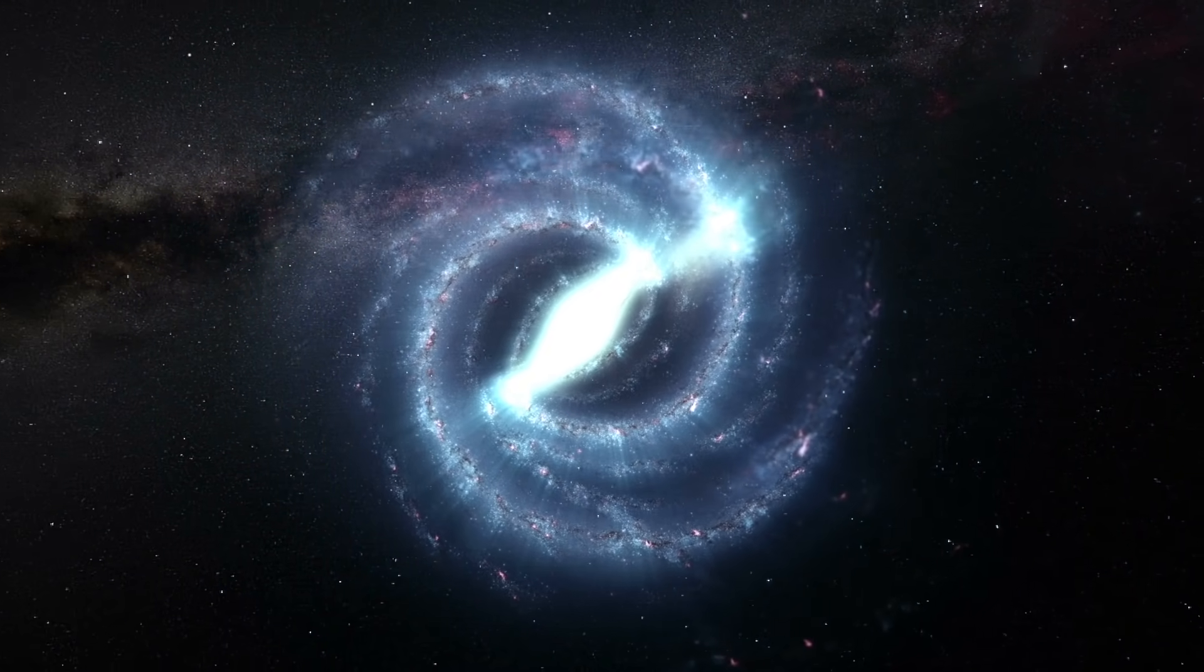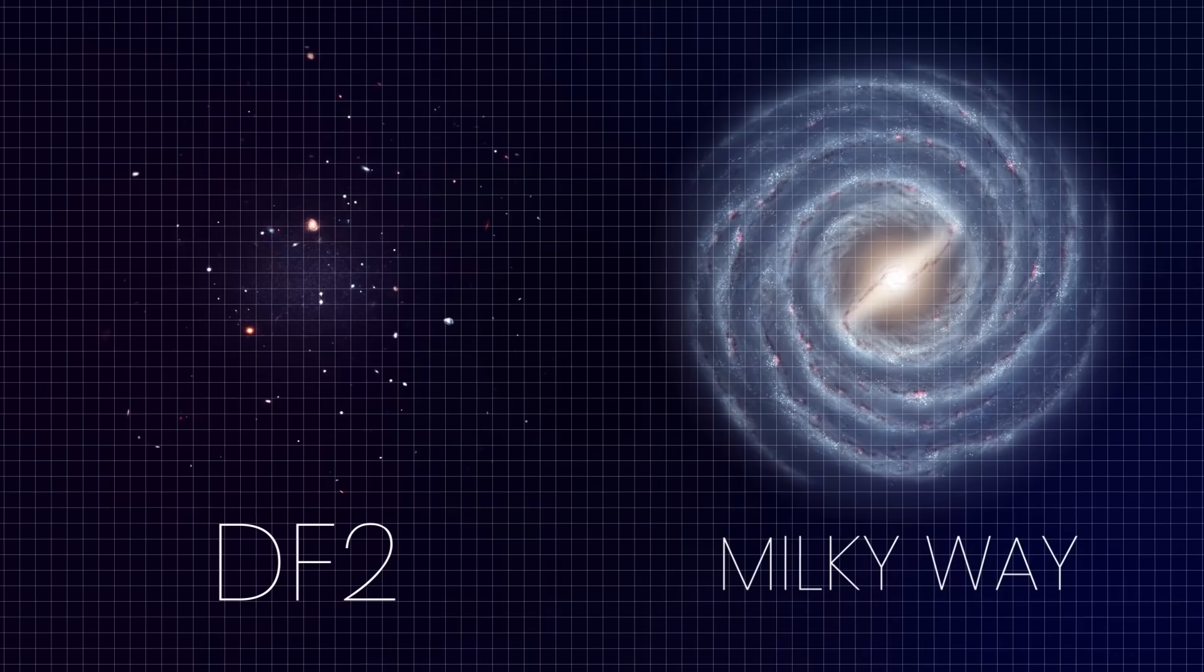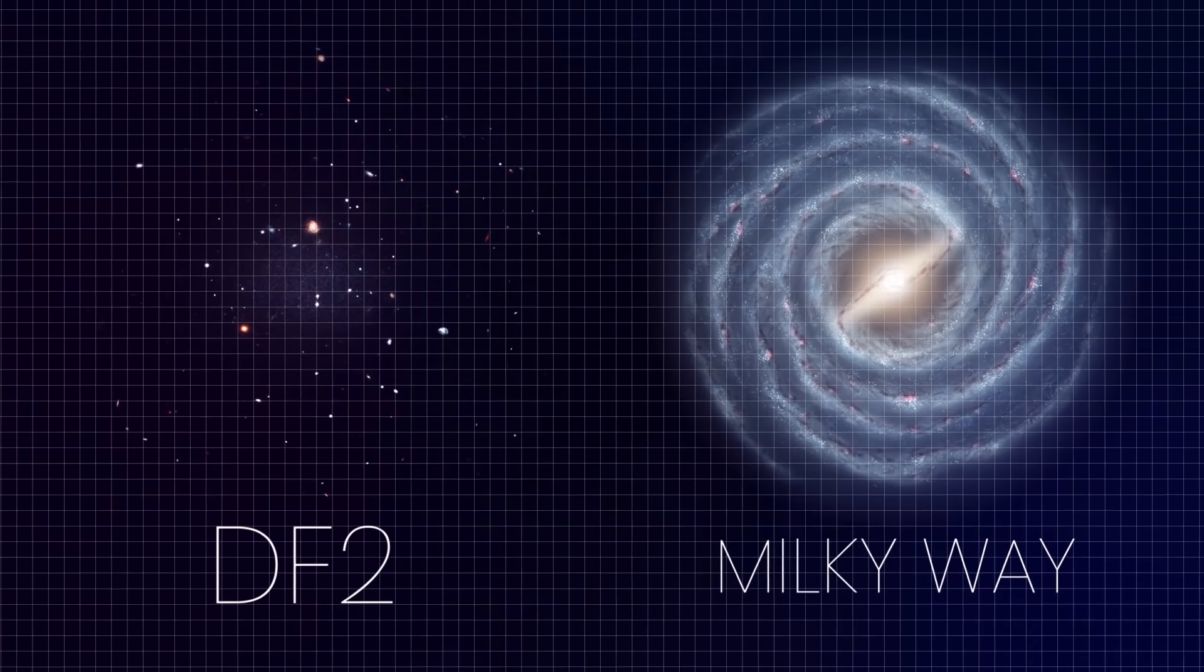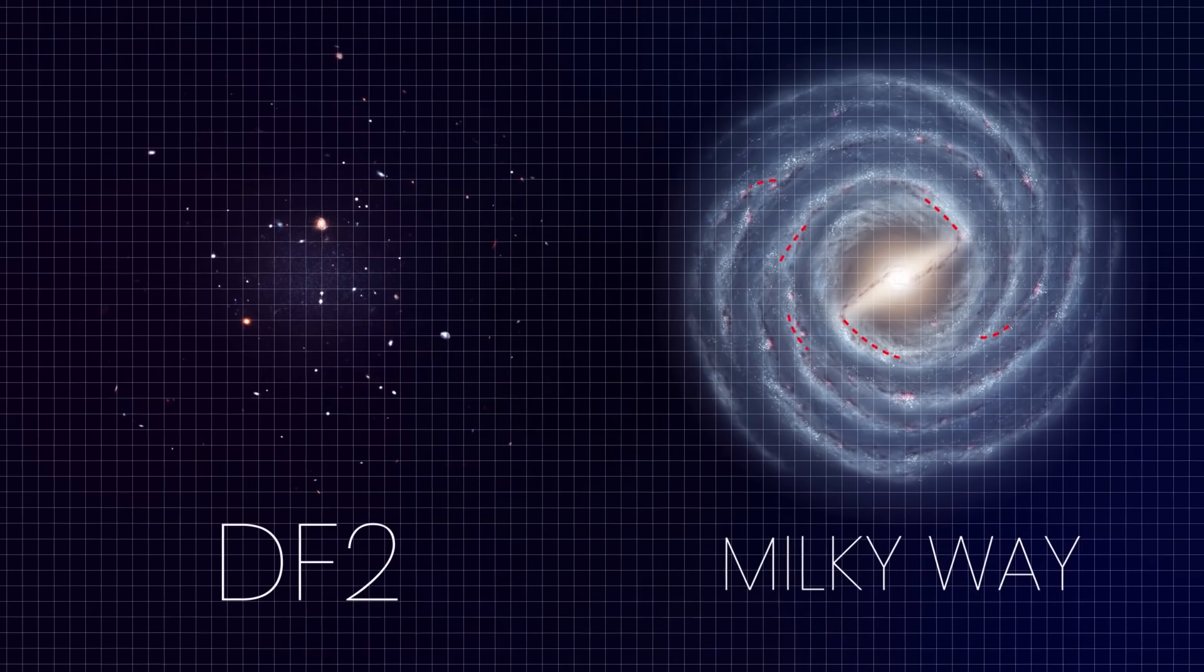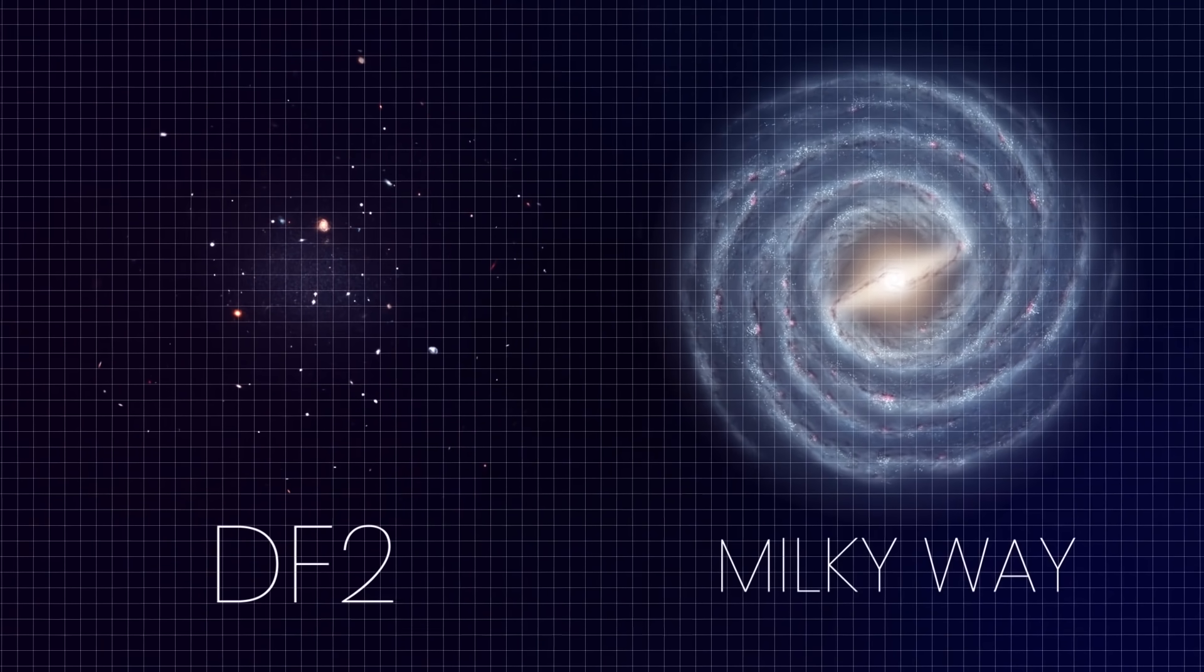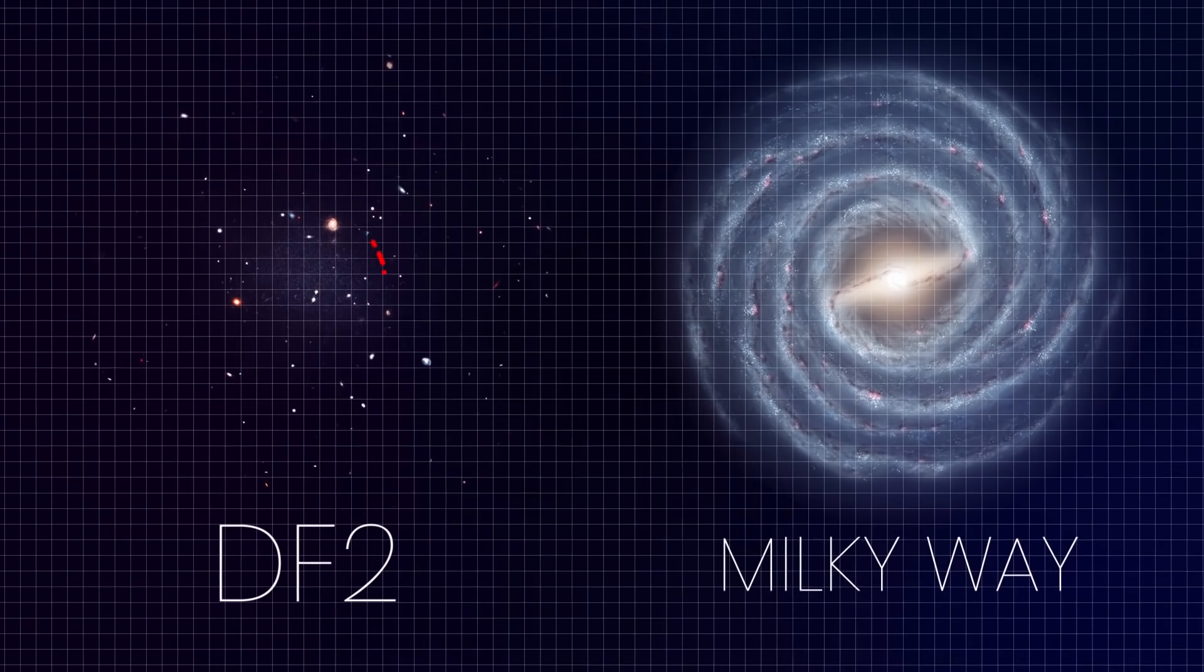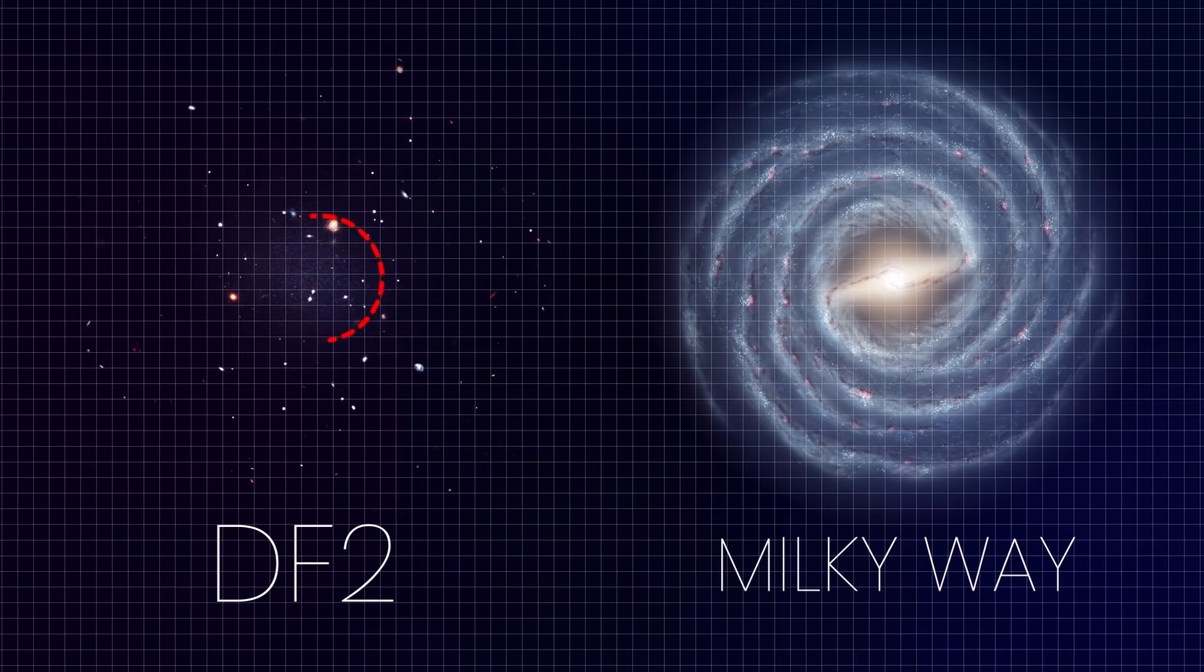One other reason that constituted DF2 as an oddball galaxy is its shape. It doesn't have a noticeable central region or any of the characteristics of a spiral galaxy such as spiral arms or a disk. It doesn't look like an elliptical galaxy either, and there's no evidence that DF2 has a central black hole, just a stellar halo and several globular clusters.